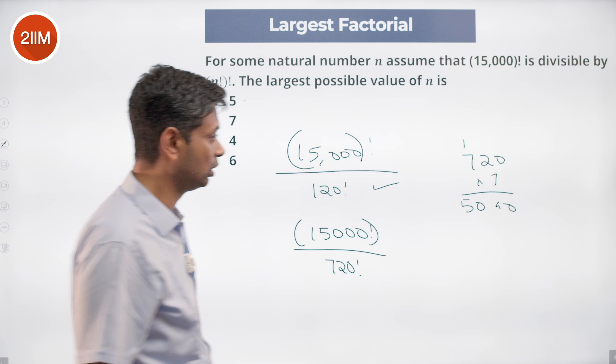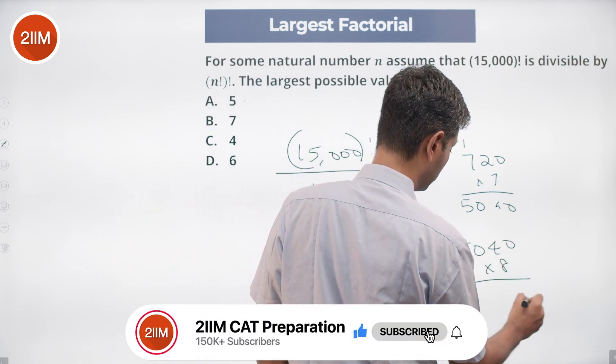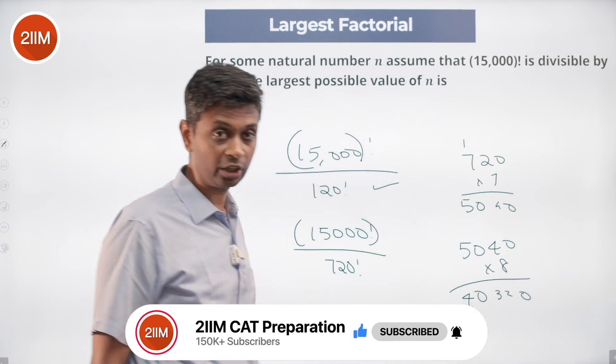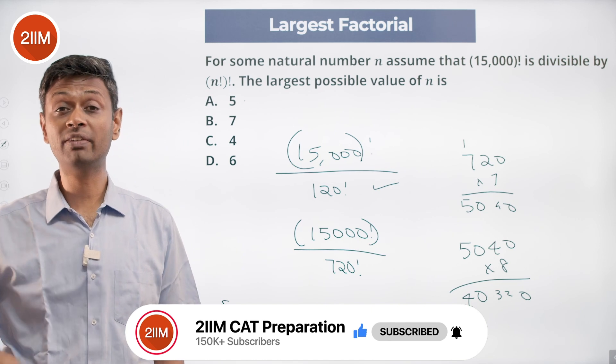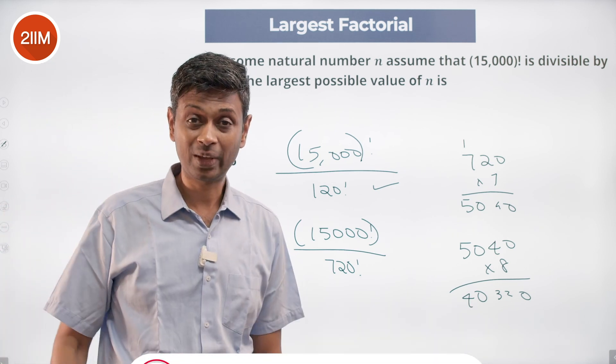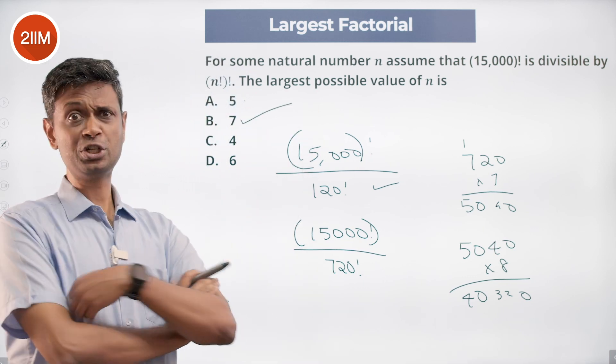Put 8 factorial: 5040 into 8, 40,320. 8 factorial factorial will become bigger than 15,000 factorial, so 8 is not possible. 7 is possible. Seems like a very intimidating question.